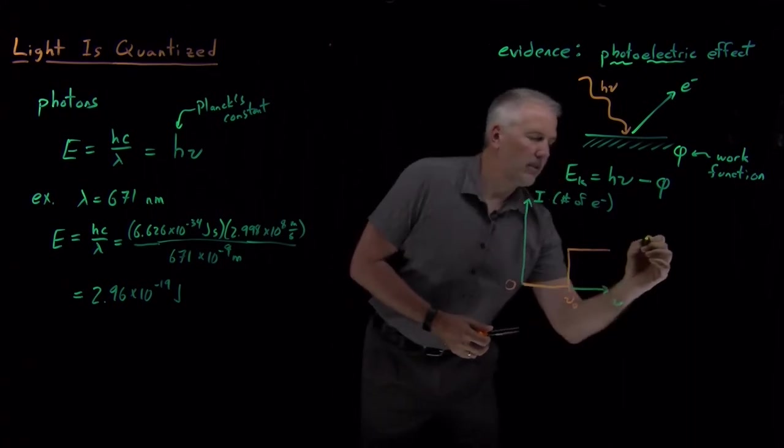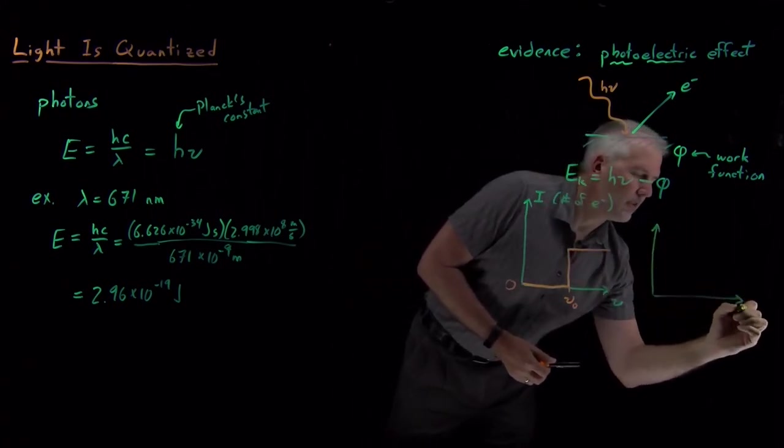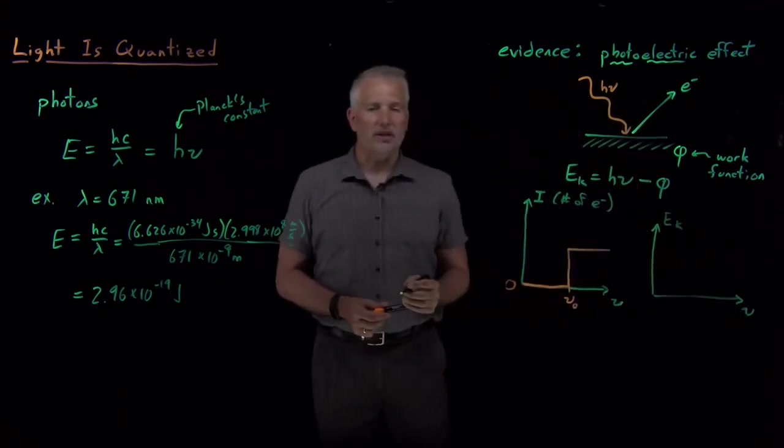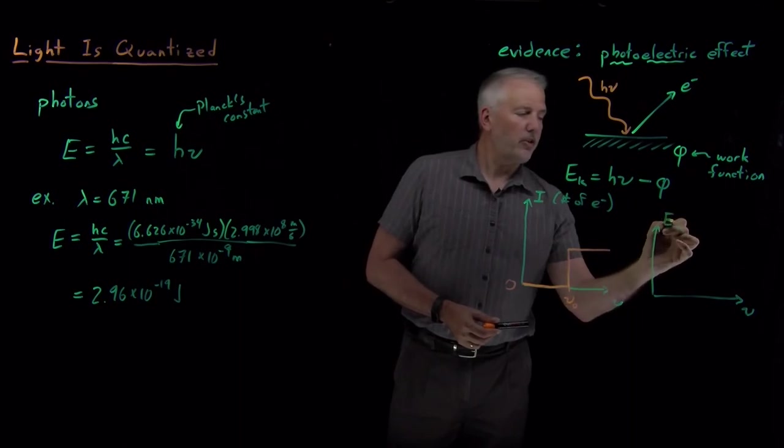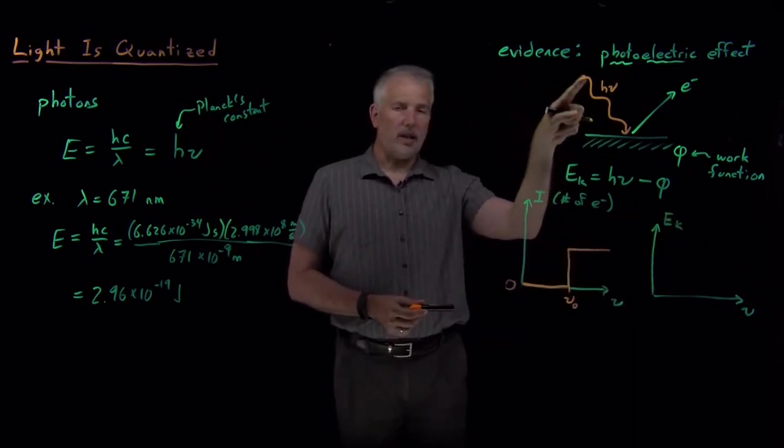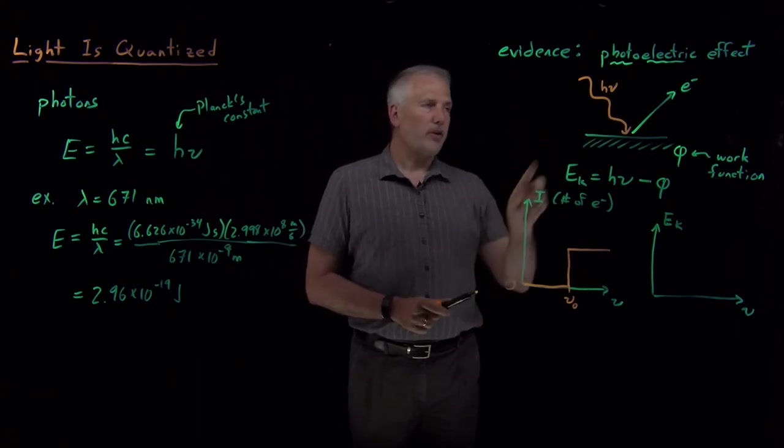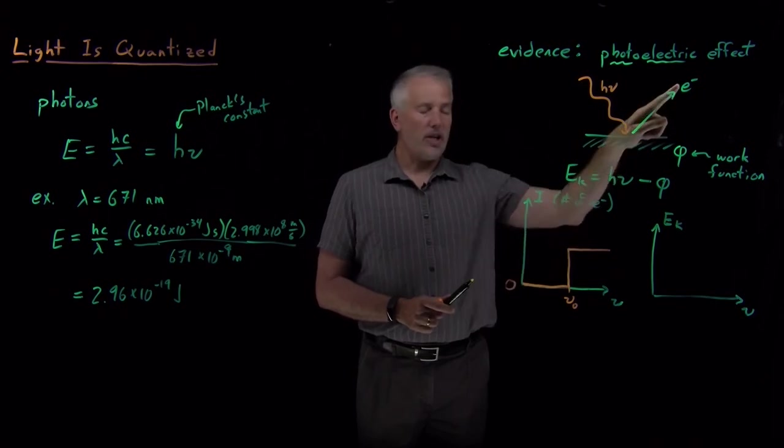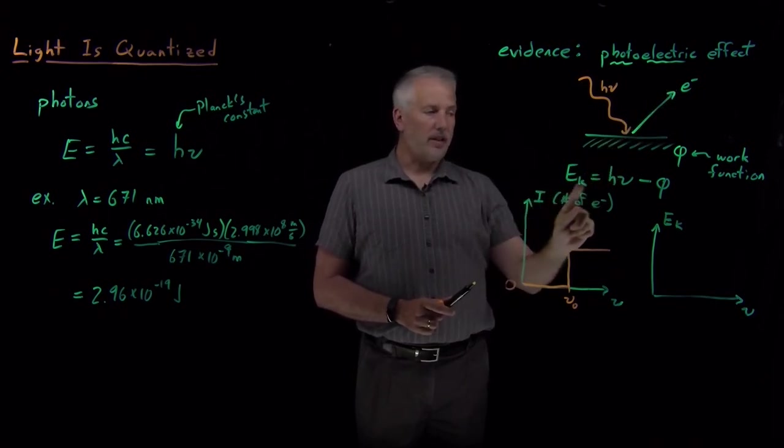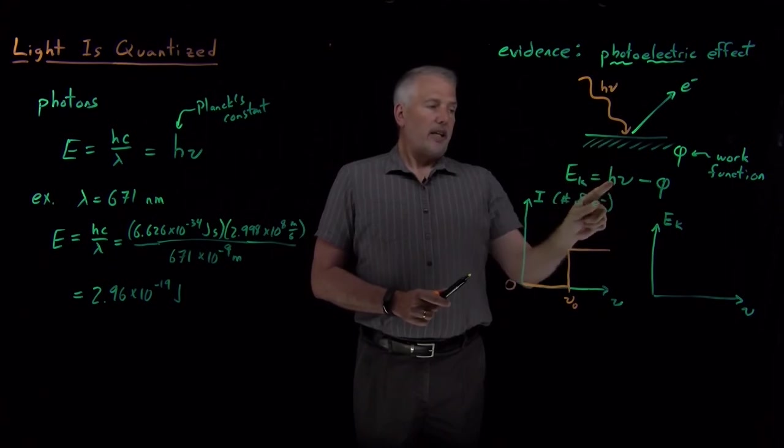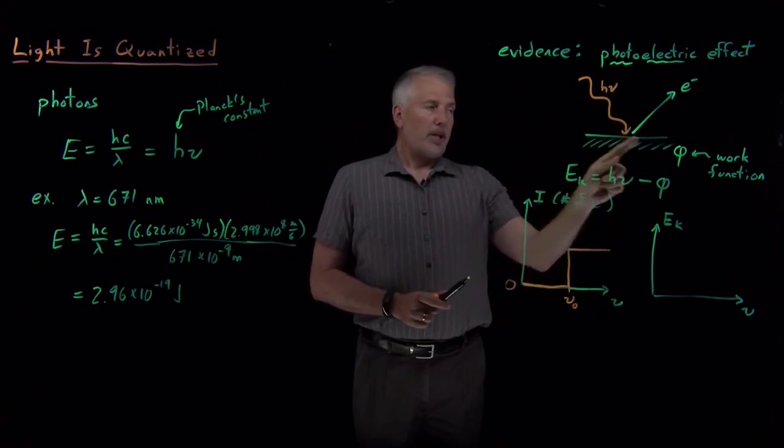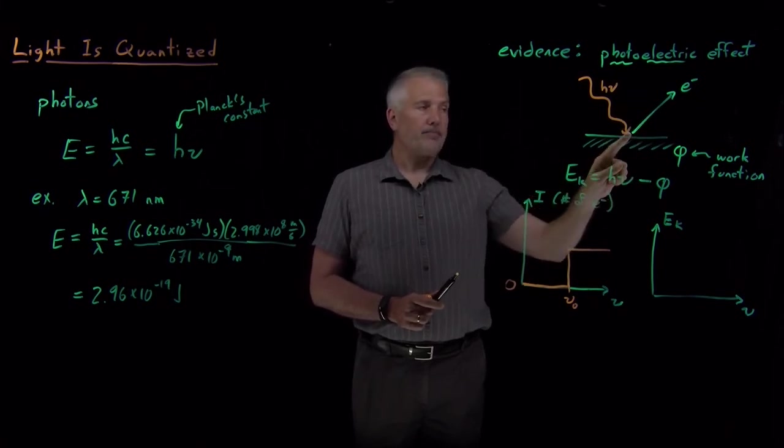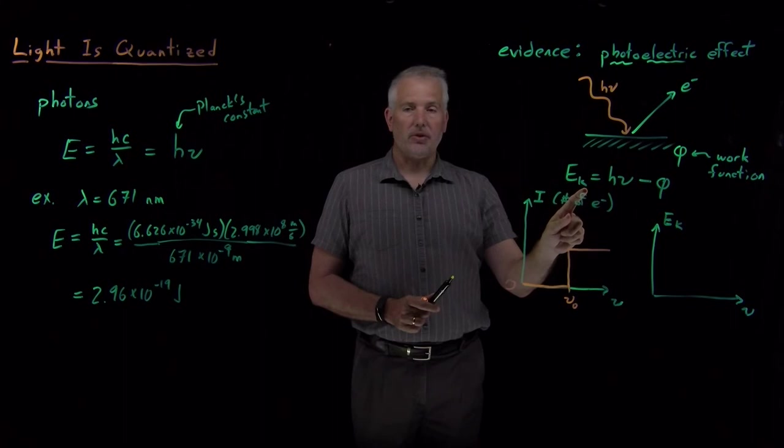I could also ask how does the kinetic energy of those electrons change as I increase the frequency. As I make this light change from red to yellow to green to blue to violet to ultraviolet, by increasing the energy of the photon by changing its frequency, what happens to the energy of the electron that gets kicked out? This equation tells us H nu is the input energy coming in, phi is the amount I have to pay to remove the electron, and as long as I have enough energy to remove an electron, then all the excess energy goes into the kinetic energy.